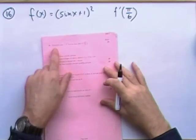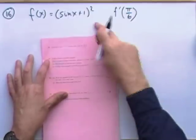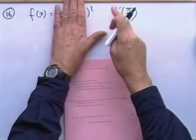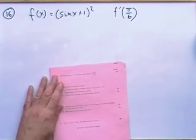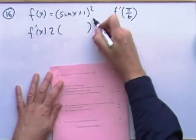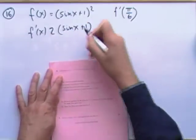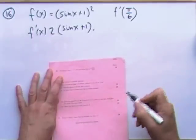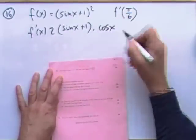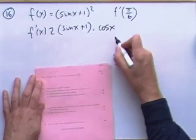Question 16: given this function, find the value of the derivative at a certain x. It's a function of a function — chain rule. If it were just something squared it'd be 2 times the thing. But there's an inner function: the outer derivative is 2 times (sin x + 1) to the power one, and then multiply by the derivative of the inner part. Sine differentiates to cosine, and plus one disappears as a constant.